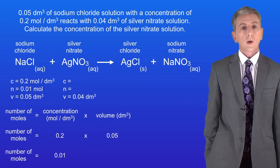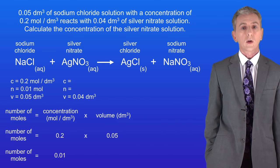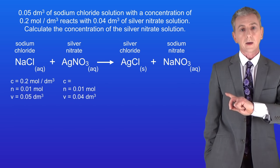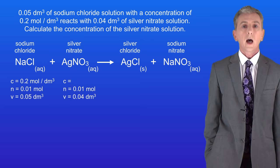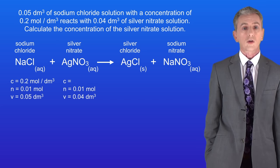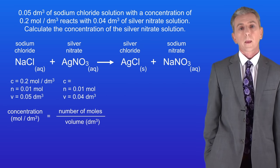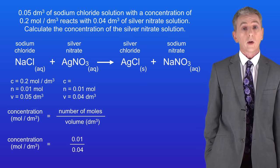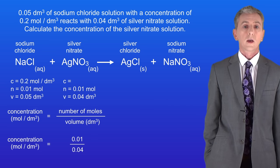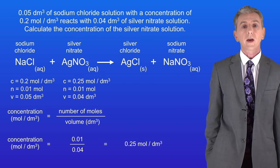We know that one mole of sodium chloride reacts with one mole of silver nitrate, which means we must also have 0.01 moles of silver nitrate. Now we know both the number of moles and the volume of the silver nitrate solution, so we can calculate the concentration by dividing moles by volume: 0.01 divided by 0.04 decimetres cubed gives a concentration of 0.25 moles per decimetre cubed — and that's our final answer.